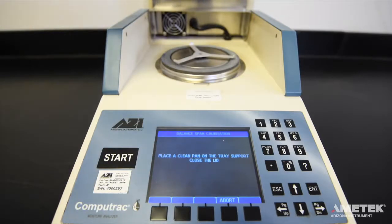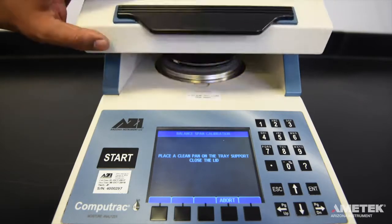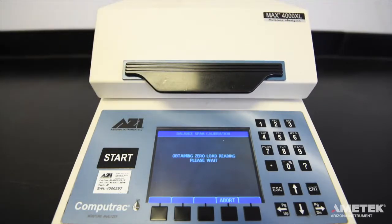After placing a clean pan on the pan support and closing the lid, the instrument will begin obtaining a zero-load reading. This reading allows the instrument to recognize what the empty sample pan looks like and compare it to the reading when the 20 gram weight is added.